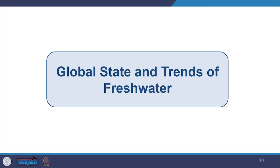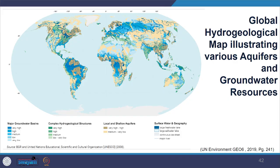Now let us look at the global state and trends of fresh water. Looking at the state of water quantity and the global hydrological map, you can see how aquifers and groundwater sources are unevenly distributed across the globe.